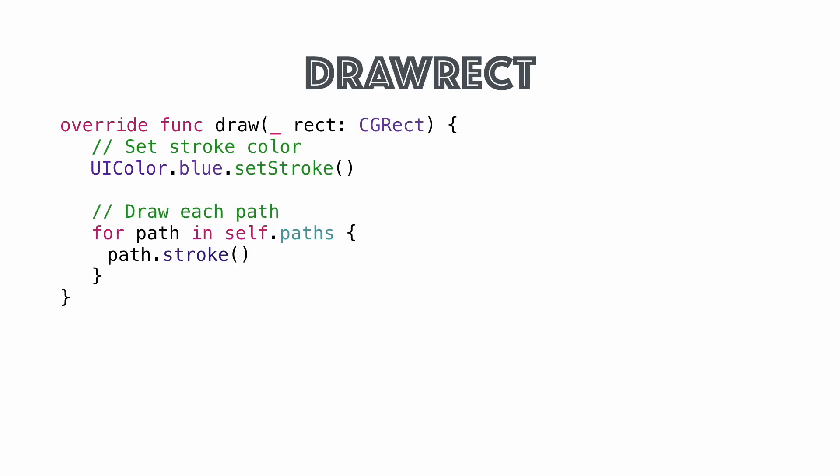In drawRect, we set the stroke color, then iterate through our array of paths and stroke them. And then we have a drawing program in about a dozen lines of code.